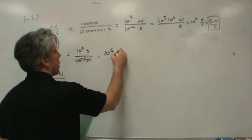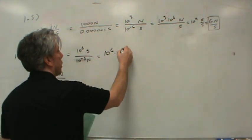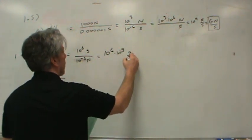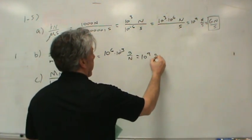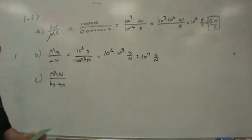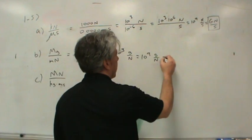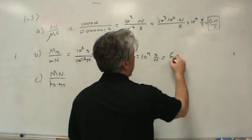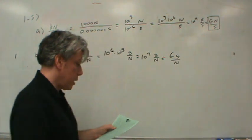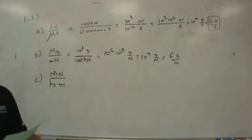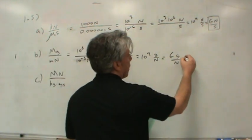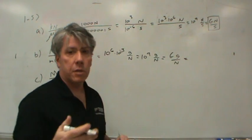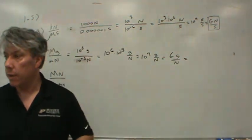We end up with essentially the same thing as we did before. We end up with ten to the ninth grams per newton. Well, at least that's what your textbook says. I don't really like that. I mean, I think they've got a bunch of answers in the back of the book. I think I looked at it on something like gigagrams per newton. But I think there's more to it than this.